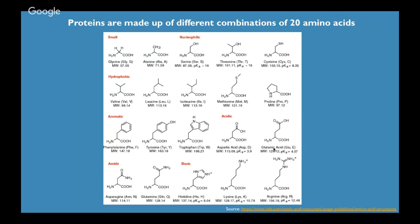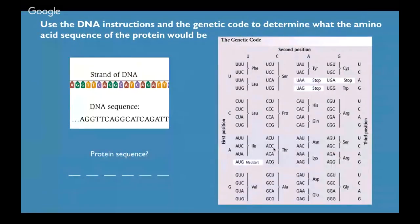To give you a little practice on how this works — we have a strand of DNA on the left: AGG, TTC, AGG, CAT. If you're going to use these DNA instructions and the genetic code to determine what the amino acid sequence of the protein would be, remember each T in order to use this code template would be a U. I'll give about 30 seconds for you to try to put together what you think that protein sequence would be.